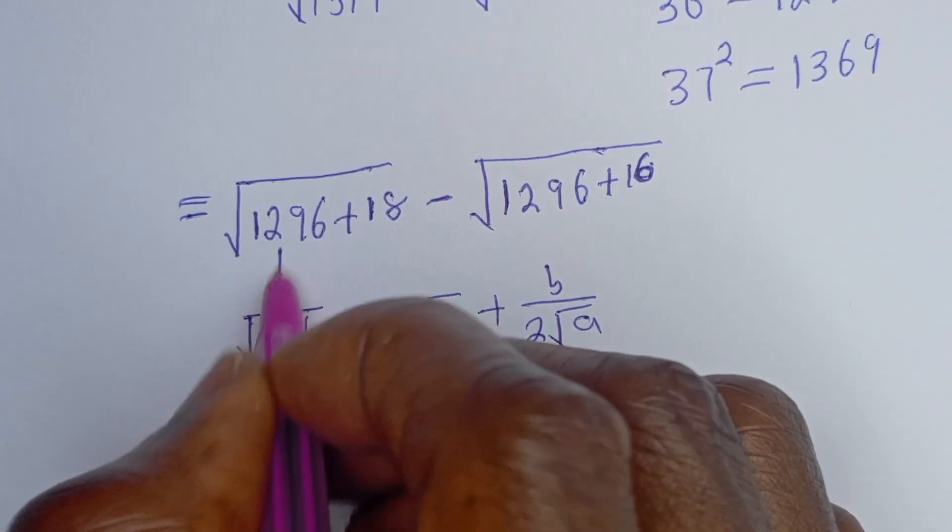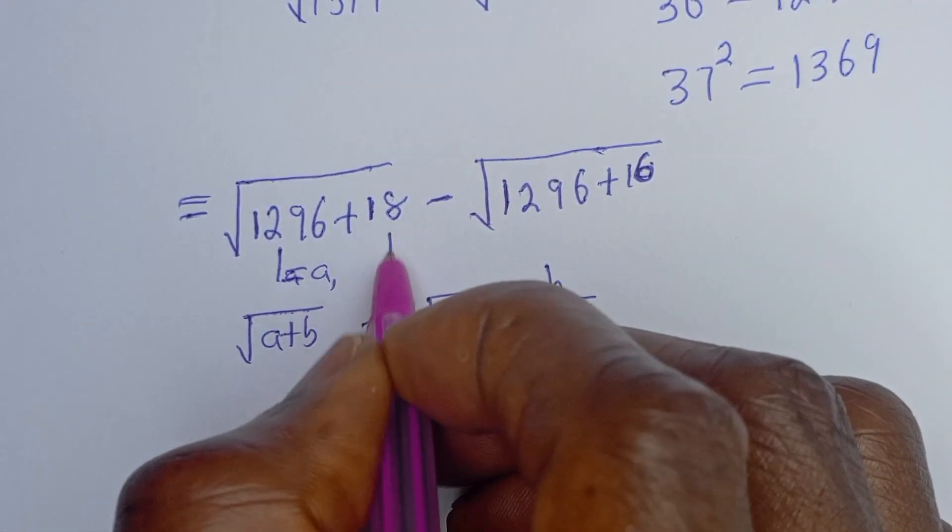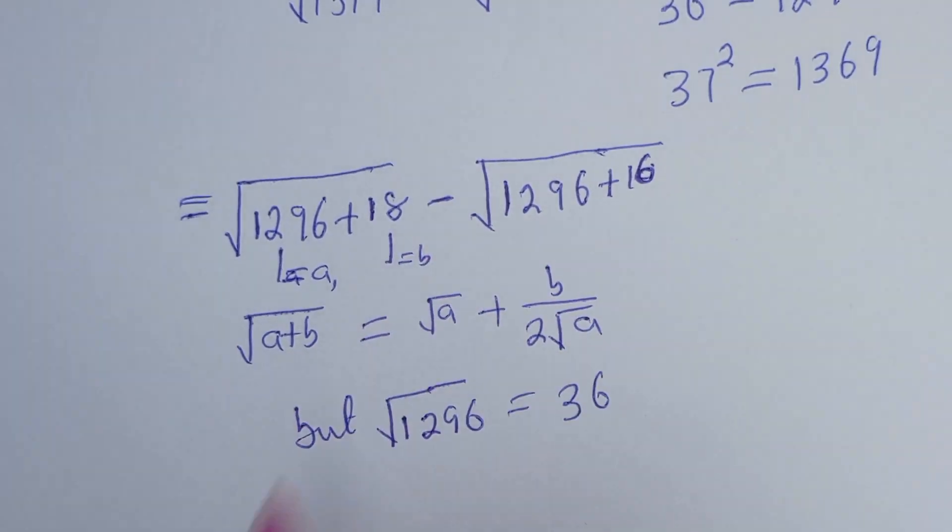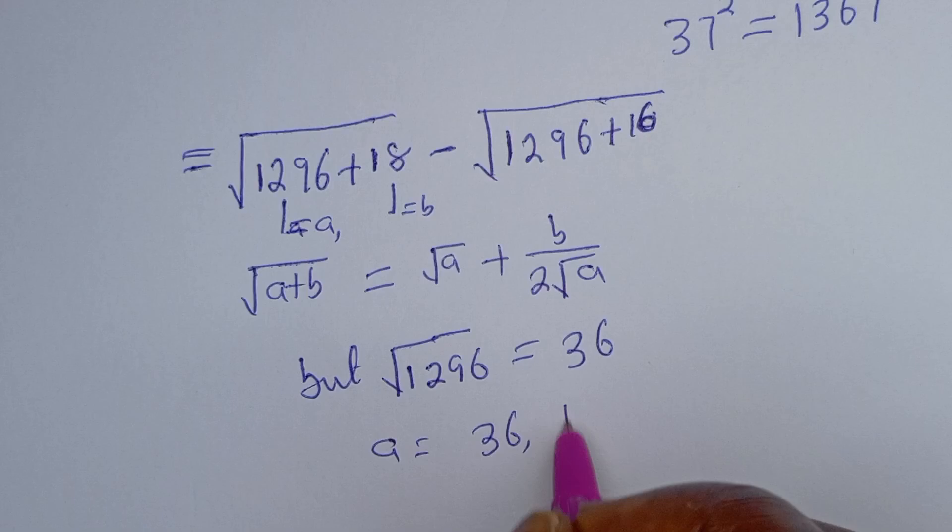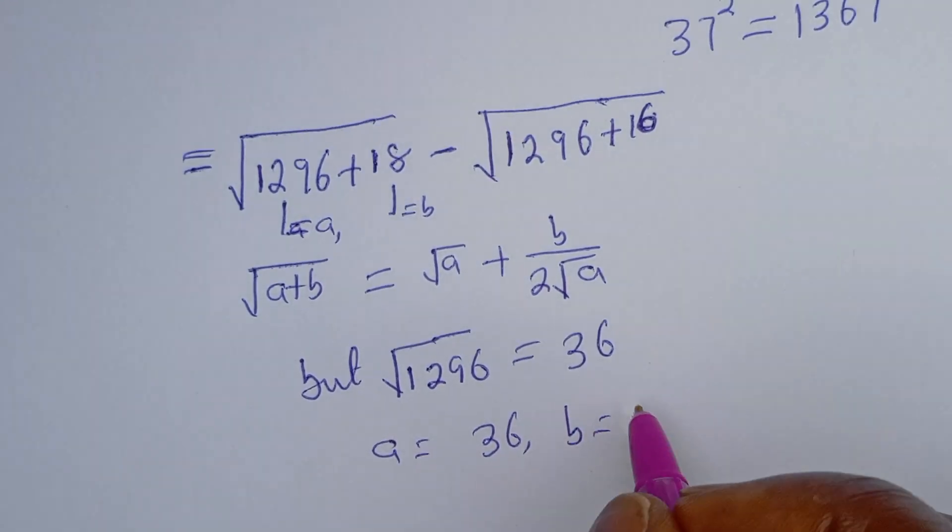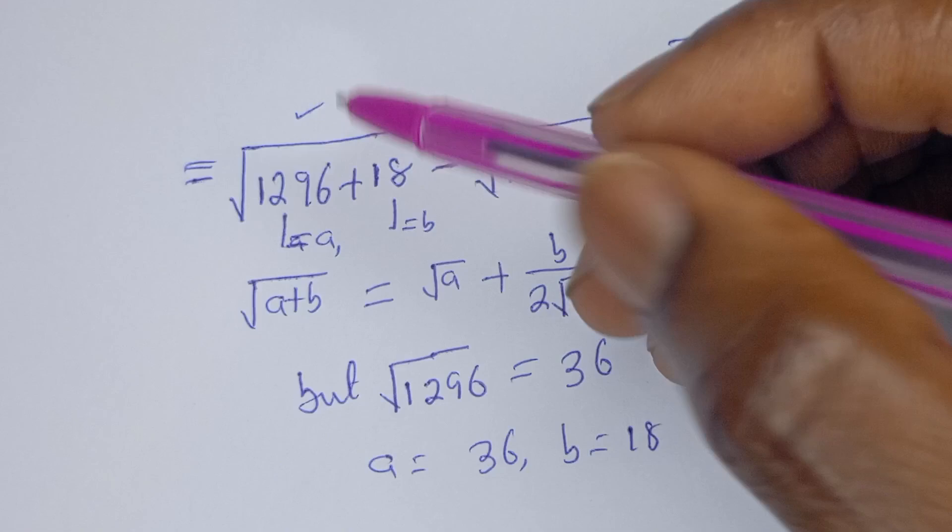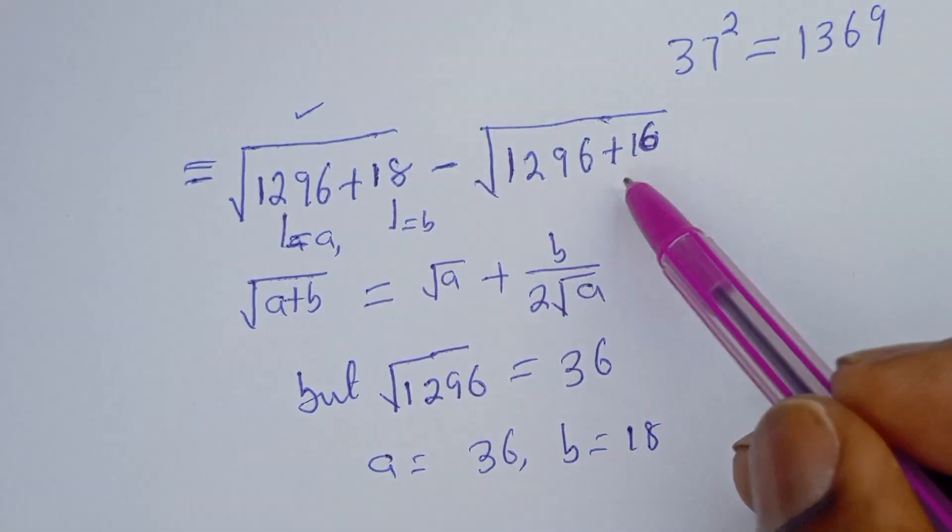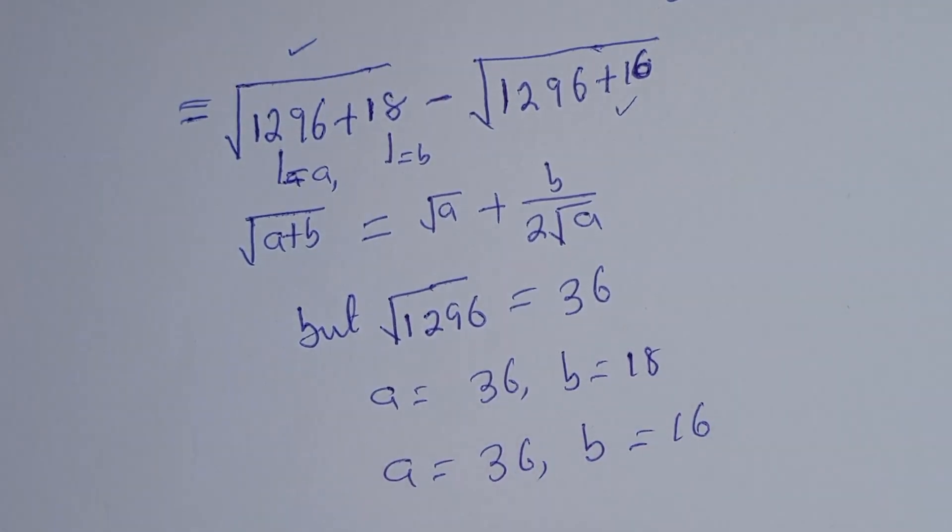Therefore, from here, a is equal to this and this is equal to b. So a is equal to 36, b is equal to 18 from here, and from here a is equal to 36, b is equal to 16.